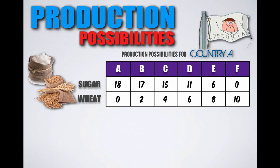Let's get back to production possibilities. The function listed gives you six different production possibility combinations of sugar and wheat that Petoria can produce at any given time. It is only possible for Petoria to produce at one combination at a time. At combination A, Petoria can produce 18 units of sugar and no units of wheat — all of its resources are allocated towards sugar production at point A.